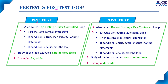In a pre-test loop, the condition is tested first, which is why it is also called a top testing loop. Since the condition is evaluated first and only when it proves true will the body of the loop execute, it is also called an entry controlled loop.